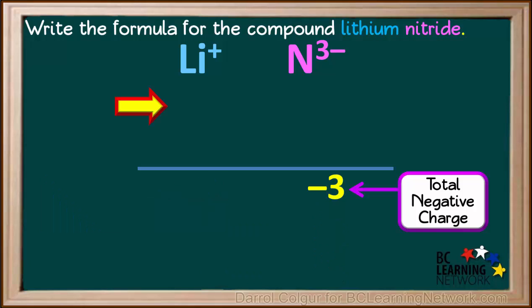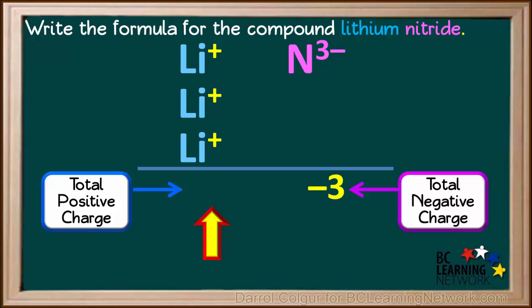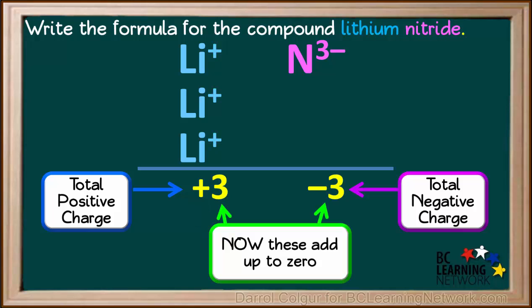But if we add two more lithium ions, the total positive charge is now equal to 3 times positive 1, which is positive 3. So now the positive and negative charges are balanced. Positive 3 and negative 3 do add up to zero.